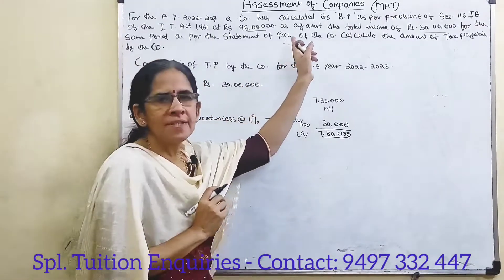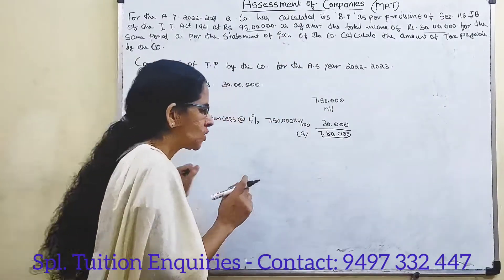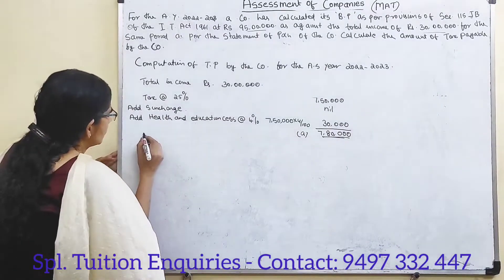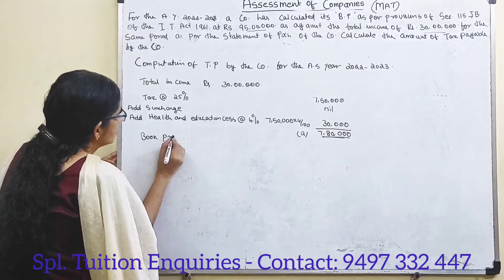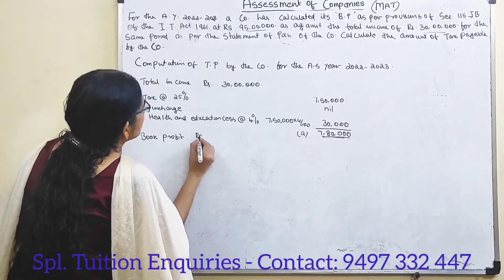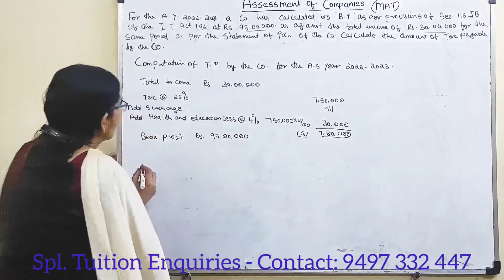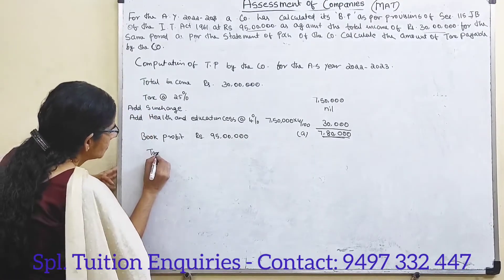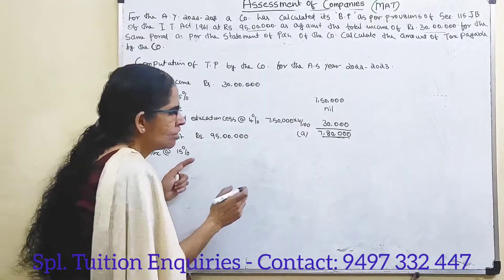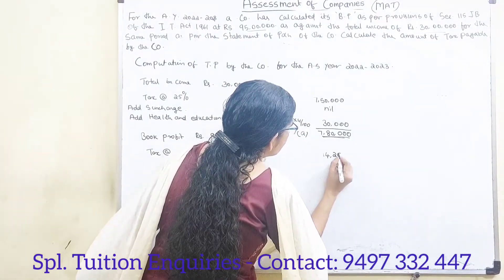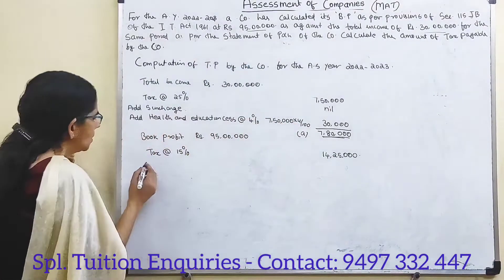Now, tax on book profit at 15%. Book profit is Rs. 95 lakhs. Tax at the rate of 15% on 95 lakhs gives Rs. 14 lakhs 25 thousand.